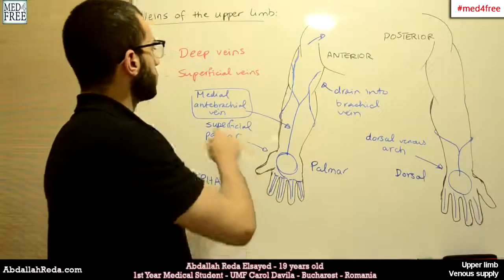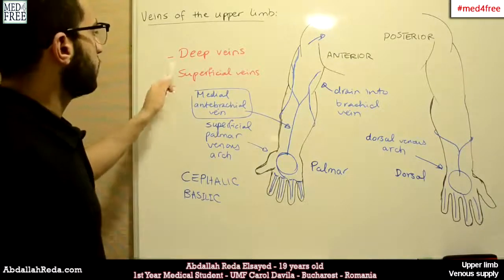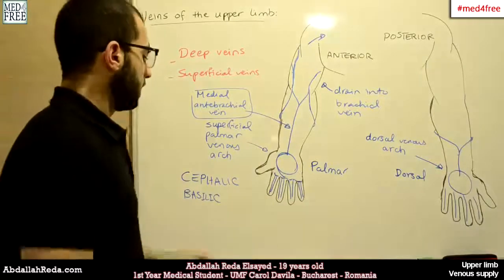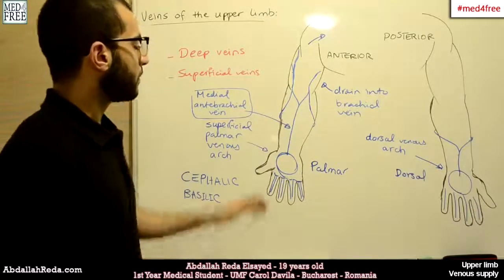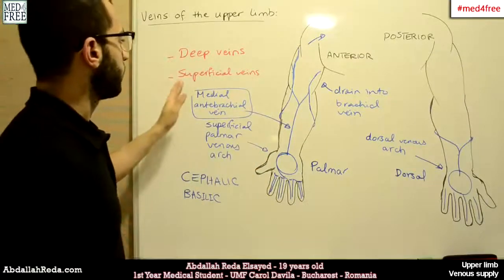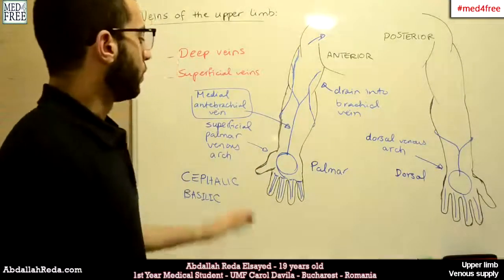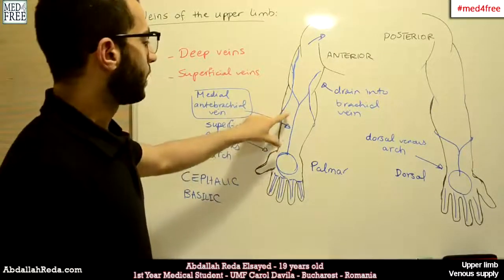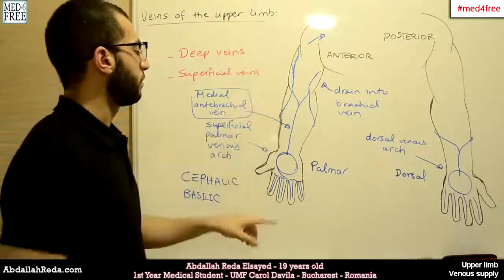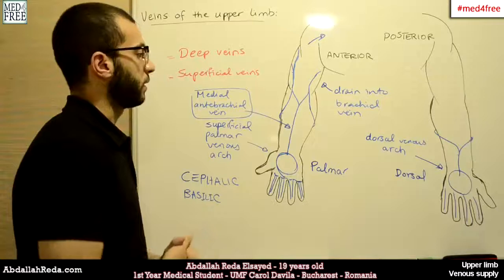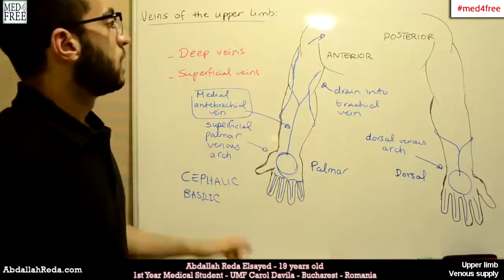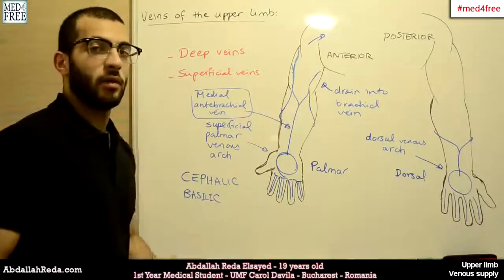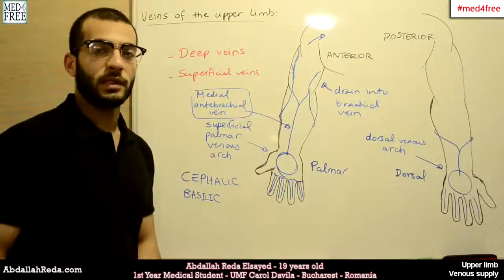These are the superficial veins. The deep veins have the same names as the arteries of the upper limb. Both deep and superficial veins communicate with each other through perforating veins, especially at the level of the hand, and also at the level of the forearm through perforating branches of the medial antebrachial veins. This is the venous structure of the upper limb.